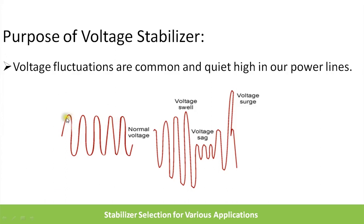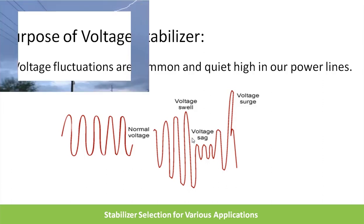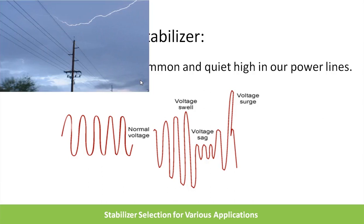But this voltage is not always at the correct level. Because of various reasons there can be voltage sag, surge, transient, or brownout — these are technical terms for high and low voltages not acceptable to your appliance. These voltages will disturb the operation of the appliance or sometimes damage it, so in order to protect your appliance we need to use a voltage stabilizer.